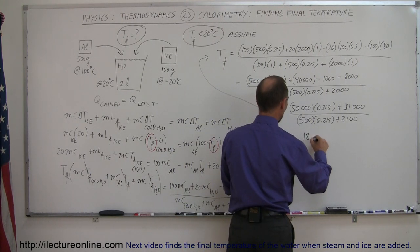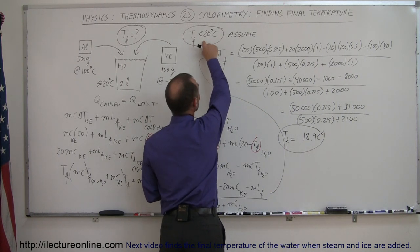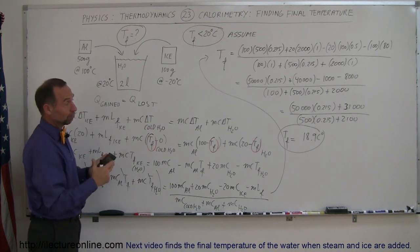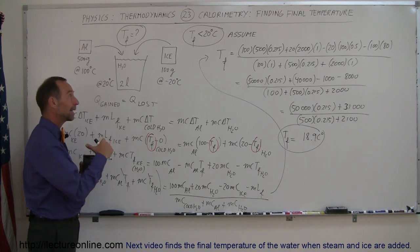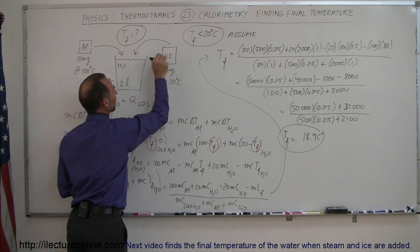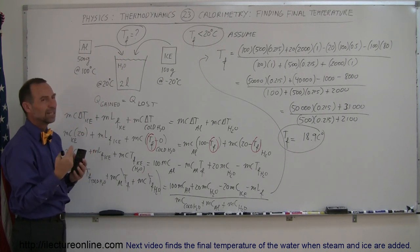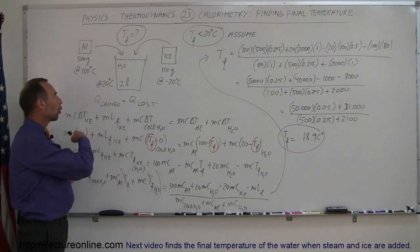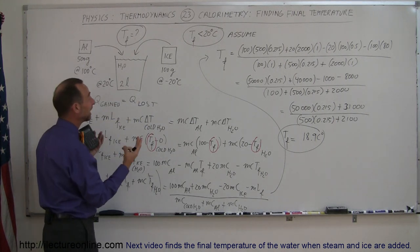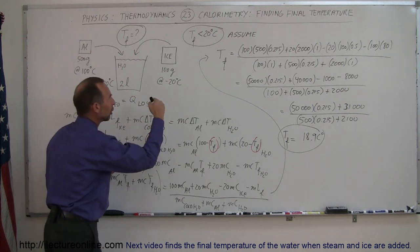The result is 18.9°C. My assumption was correct — the final temperature is less than 20 degrees centigrade, so I don't have to redo the problem. It comes down to whether the ice or the aluminum had more of an effect: the ice dominated, pulling the temperature down below the starting water temperature of 20°C, and we end up with a final temperature lower than the initial bucket temperature.